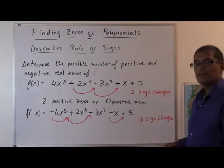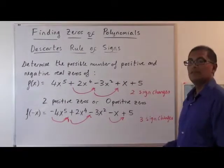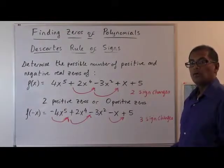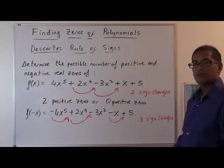And what does that tell us? That means we have three negative zeros or one negative zero because we decrease by even amounts.